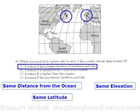Number one: location A has a longer duration of insolation each day. No — A and B have the same latitude, so the length of insolation will be based on their latitude and will be equal for both.